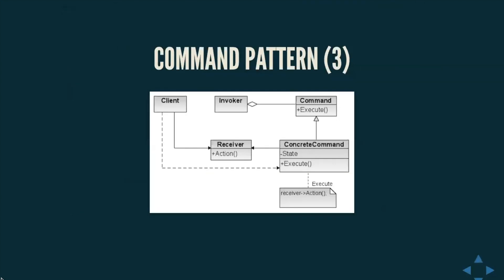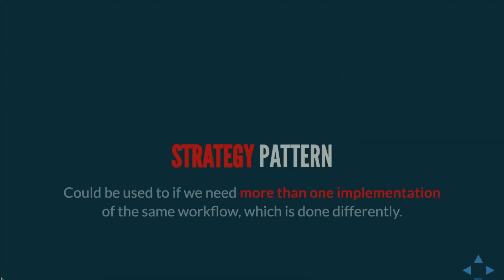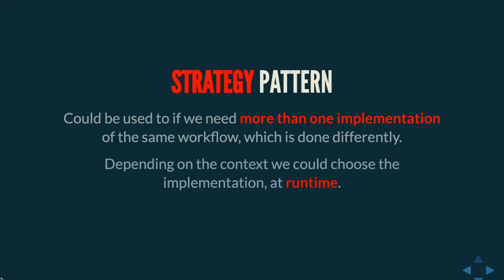Visually, we have a client that knows about the receiver and how to invoke its methods. The invoker knows about the command and how to execute concrete commands. The client holds references to the invoker, command, and receiver and decides which to execute and at which point in time. Next, let's look at the strategy pattern, which is very useful when we need more than one implementation of the same workflow performed differently at runtime. Depending on the context, we can choose the concrete algorithm based on test needs without recompiling — it's always executed at runtime.